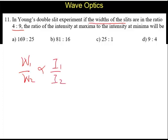Width of the slit is directly proportional to intensity. So W1/W2 equals I1/I2, which is given as 4:9.